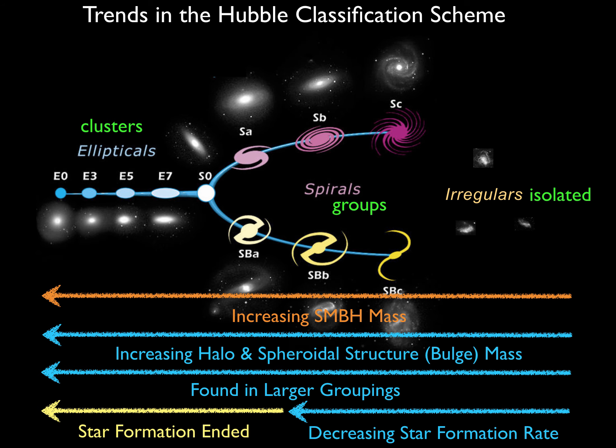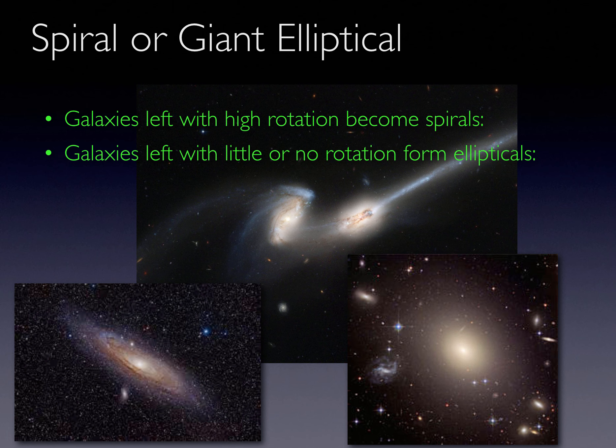On the Hubble diagram, mergers result in the evolution of galaxies from the irregular side toward the elliptical side. SA galaxies have had enough mergers to squelch star formation. Although it is now believed that ellipticals are more frequently the result of the mergers of many smaller galaxies, elliptical galaxies can also form from mergers of two large galaxies. Whether this kind of merger creates an elliptical or spiral depends on the net rotation of the newly created galaxy.